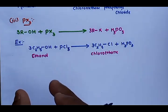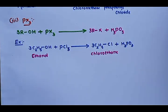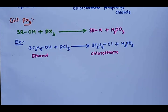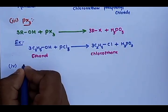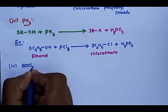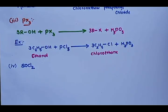So, to summarize: first, alcohol is reacted with hydrogen halide; second, alcohol is reacted with PX₅; third, alcohol is reacted with PX₃. The fourth method — very important for competitive and state board examinations — is reaction with thionyl chloride, SOCl₂.